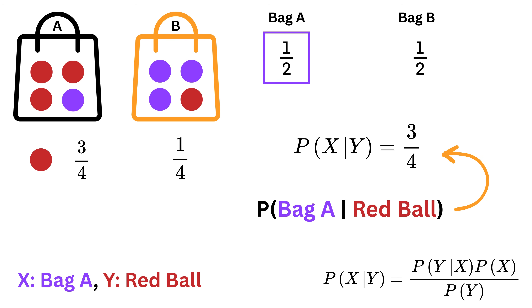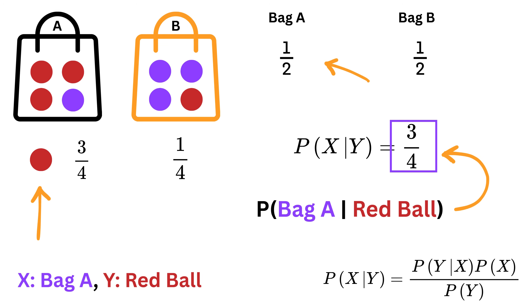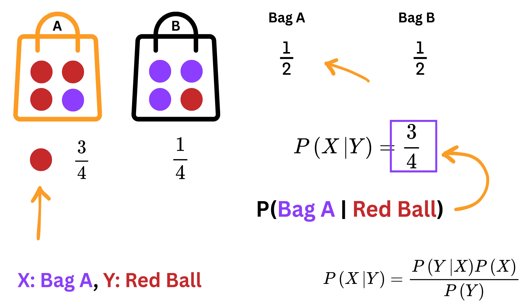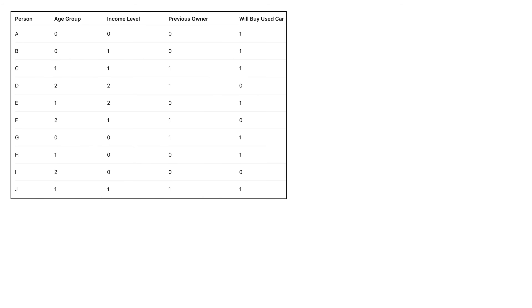At the beginning, before we knew anything about the ball picked, we had an equal 50% chance of having chosen either bag A or bag B. However, after observing that we picked a red ball, our belief about the source changed. By applying Bayes' theorem, we updated our probability, and now, based on the new information, we calculated that the probability of the red ball coming from bag A increased to 3/4, or 75%. Now that we understand Bayes' theorem, let's apply it to our original data set about people deciding whether they will buy a used car.